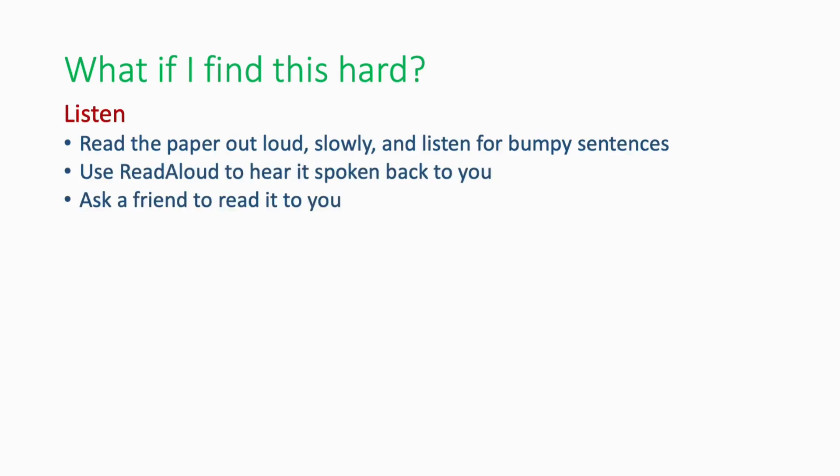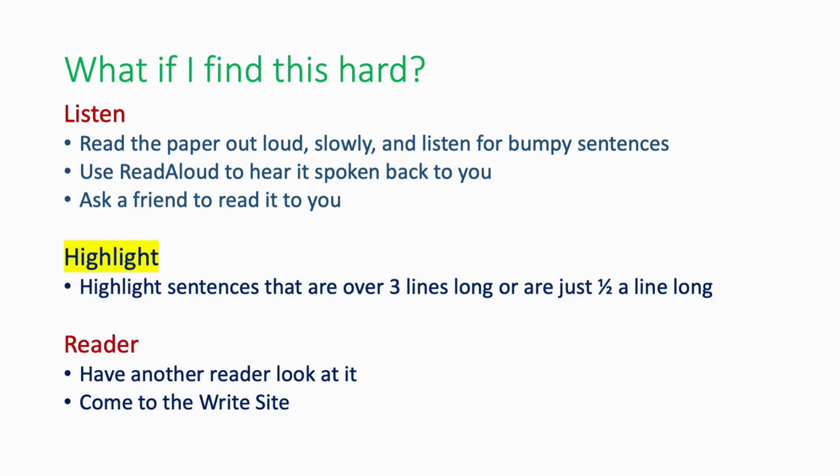But what if you find this hard? First, read the paper out loud, slowly. Listen for hesitations or bumpy sentences. You can use read-aloud tools to hear it spoken back to you, or have a friend read it to you — when you hear it through their words, you might stop and fix something. You may also want to highlight sentences that are over three lines long or just half a line long — maybe it works, or maybe it's choppy or wordy and needs attention. When you're done, have a different reader look at it, or come to the Write Site to see if they're experiencing the same issues with flow and wordsmithing.